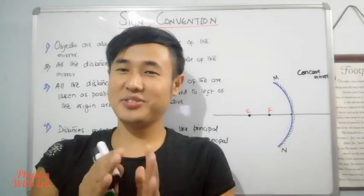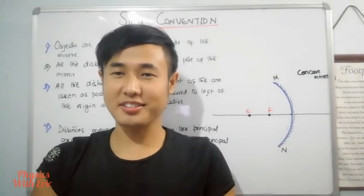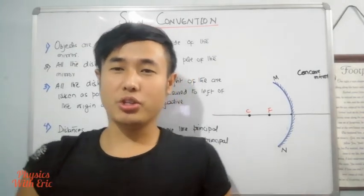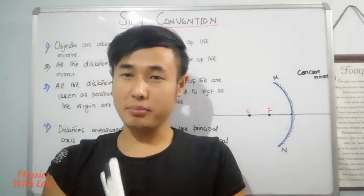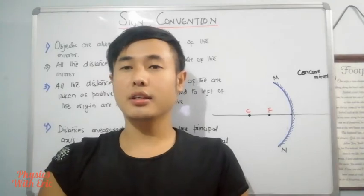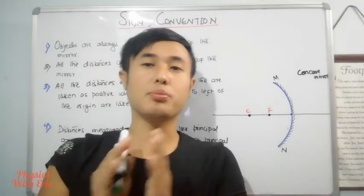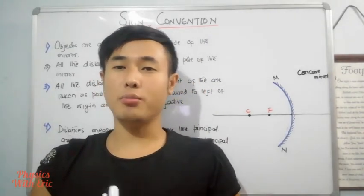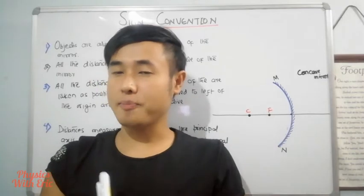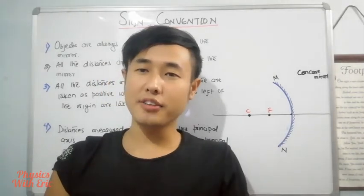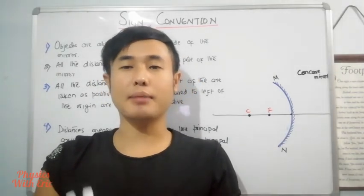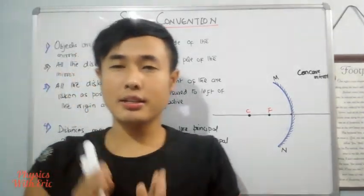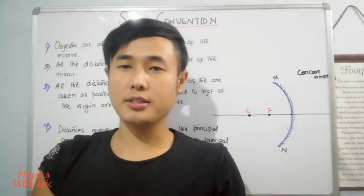Hello, dear class 10 students. Today I am going to talk about sign convention. In the previous video we talked about image formation by spherical mirrors, and we know in which position the object is placed and in which position the image forms. We know that the concave mirror or convex mirror image formation is already covered. So this is the sign convention — how do we understand it?